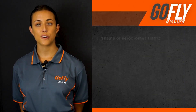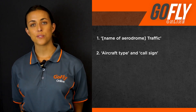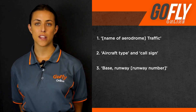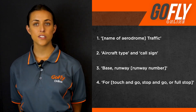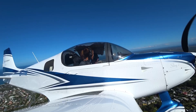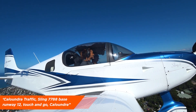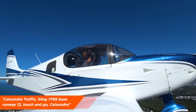If you are conducting circuits, it is also a good idea before you land to give a call with your intentions. The best place to make this call is either downwind, base, or if you think there is any conflict. A standard call would include the name of the aerodrome, followed by traffic, aircraft type and call sign, base, runway followed by the runway number, for a touch and go, stop and go or full stop, and the name of the aerodrome. An example would be: Caloundra traffic, Sling 7788, base, runway 12, touch and go, Caloundra.